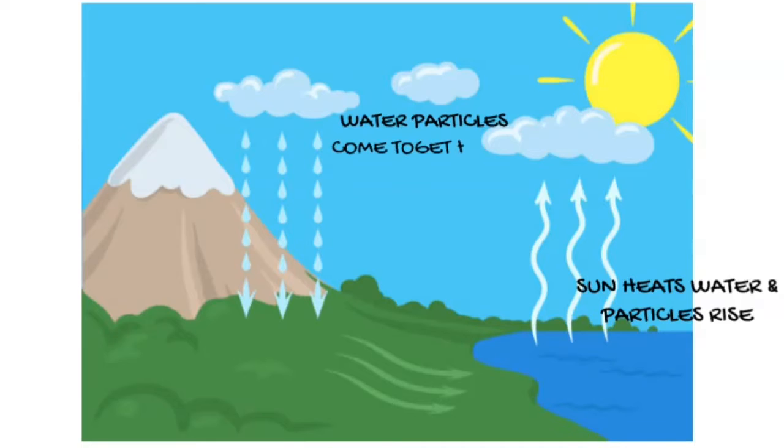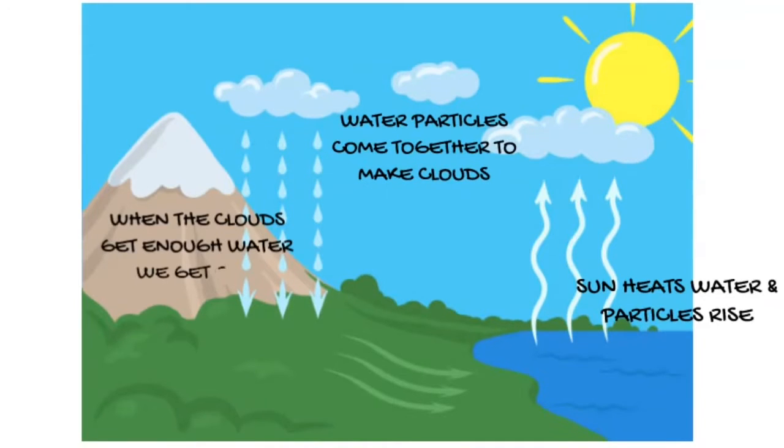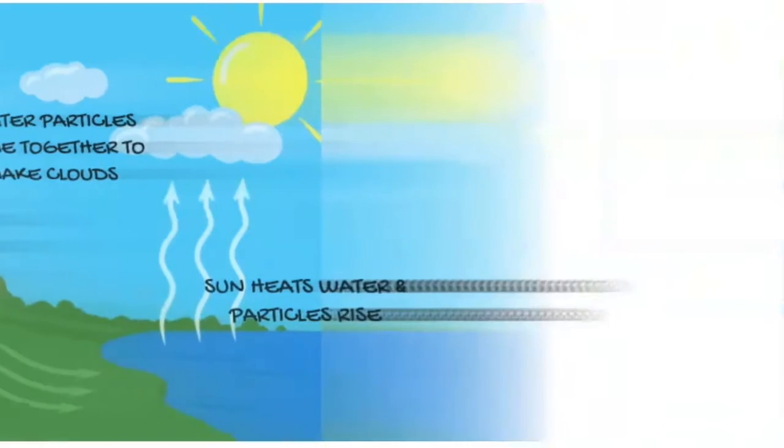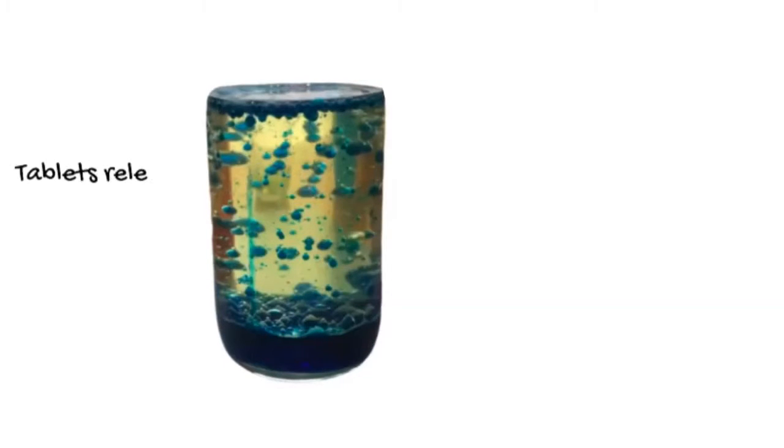When the clouds get enough water, they get heavy and the water falls as rain. So how is that like what we saw in our lava lamps? Well, here's a quick picture. The tablets that you dropped into the lava lamp release a gas called carbon dioxide.